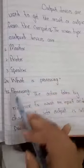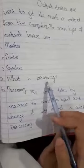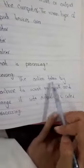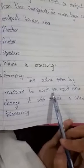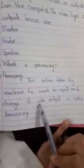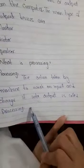Question number 4: What is processing? Processing: the action taken by machine to work on input and change it into output is called processing.